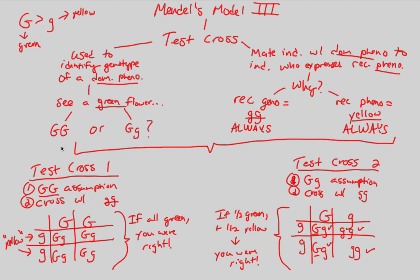A test cross is simply figuring out whether a dominant phenotype is capital G capital G or capital G lowercase g — am I looking at a dominant phenotype that is homozygous or heterozygous? If you assumed it was Gg in Test Cross 1 but got all green offspring, you know you were wrong and it has to be GG, because you were expecting half green and half yellow. That's Mendel's test cross.